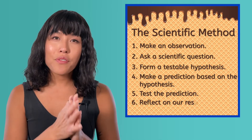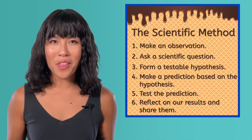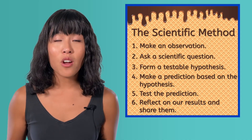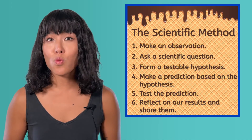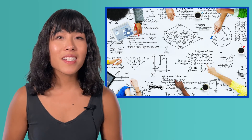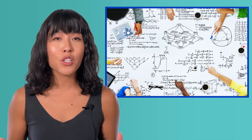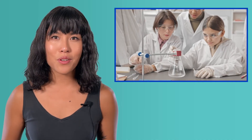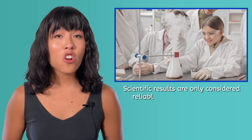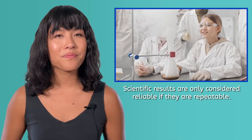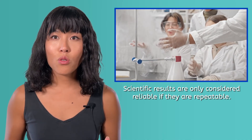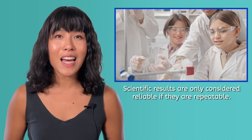The last step of the scientific method is to reflect on your results, use them to guide your next steps, and share them. If your hypothesis was supported, you might do additional tests to confirm it or revise it to be more specific. If your hypothesis wasn't supported, you might come up with a new hypothesis. A well-designed hypothesis and experiment will produce valuable results for you to share so that others can learn from your effort. In science, this is often done through scientific journals. Scientific results are only considered reliable if they are repeatable. If other scientists can't repeat your results, they may suspect bias or prejudice in your experiment. This is why good experimental design is so important.